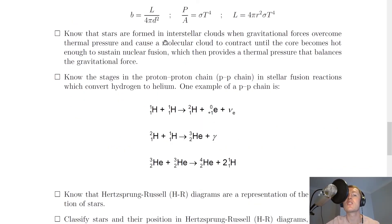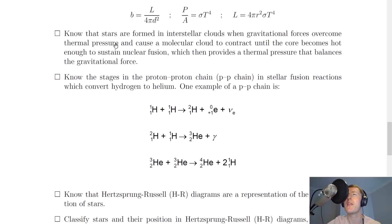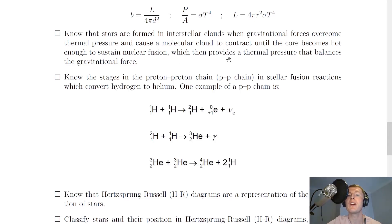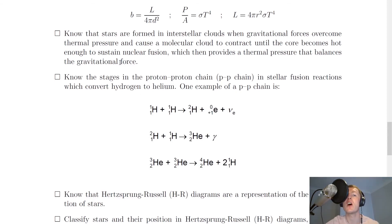You need to know that stars are formed in interstellar clouds when gravitational forces overcome thermal pressure and cause a molecular cloud to contract, until the core becomes hot enough to sustain nuclear fusion, which then provides a thermal pressure that balances the gravitational force.